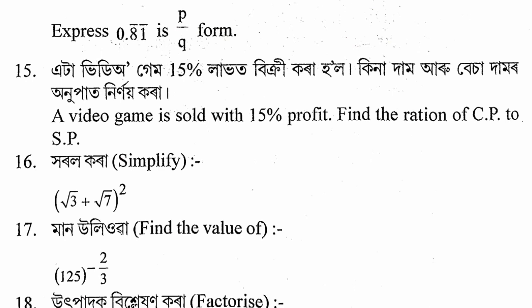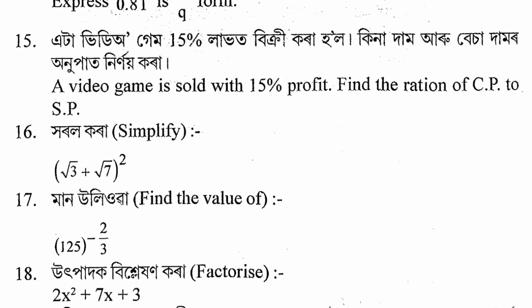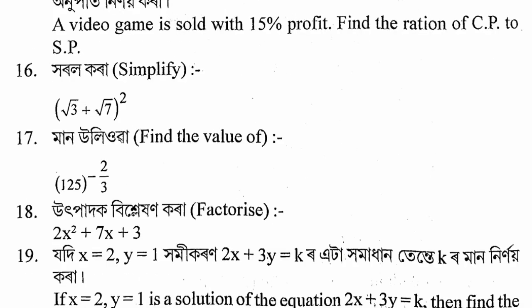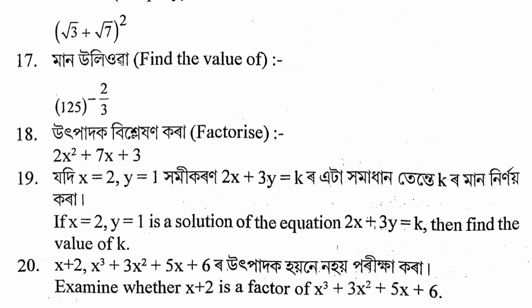Section 1, example 60: 125 to the power minus 2 by 3. We solve this using the laws of indices. The next question is to find the factors of 2x squared plus 7x plus 3 using the factorization method. We write the factors in the standard form.